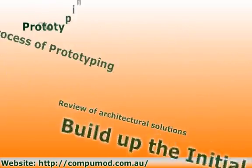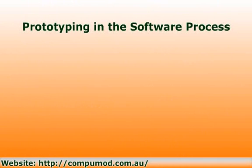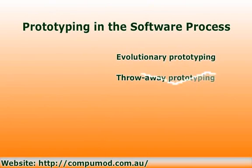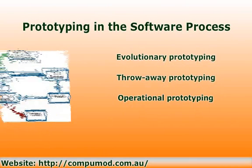Regarding types of prototyping: evolutionary prototyping is where an initial prototype is produced and refined through a number of stages to the final system. Throw-away prototyping is where a prototype is produced to help discover requirements problems and then discarded.